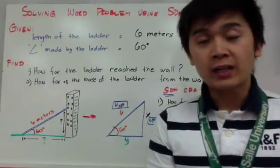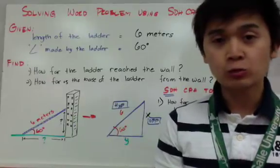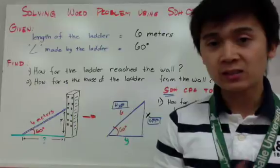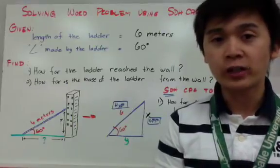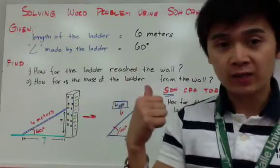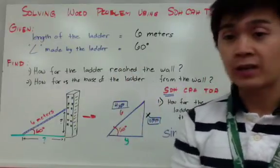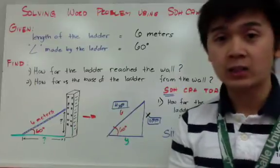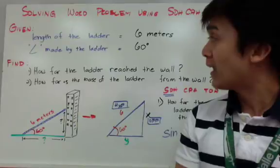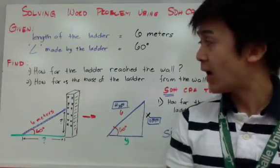In trigonometry, it is very important that you can visualize the word problem and associate it with the right triangle. Let's dissect the word problem and organize it by what is given and what we need to find. The given values are the length of the ladder, which is 6 meters, and the angle of 60 degrees formed by the ladder with the ground.